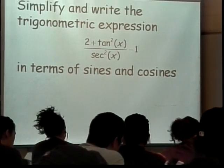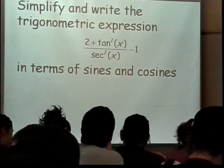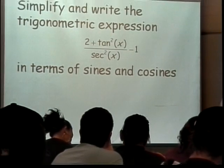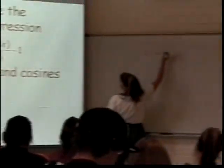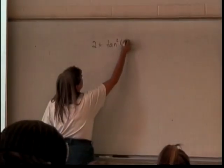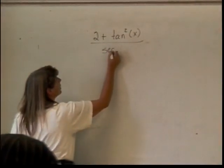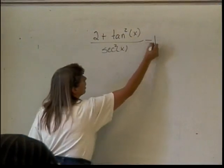So, suggestions for rewriting this thing. I have the 2 plus the tangent squared of x over secant squared of x minus 1.